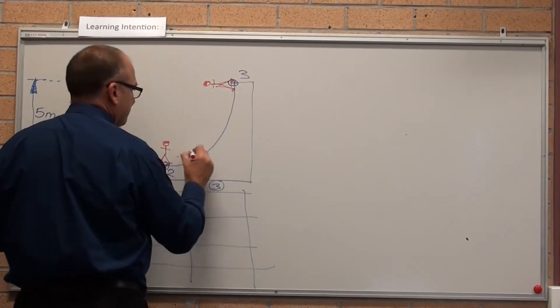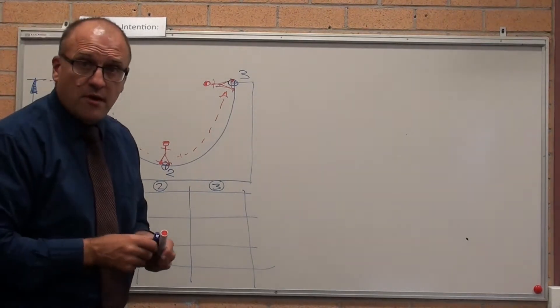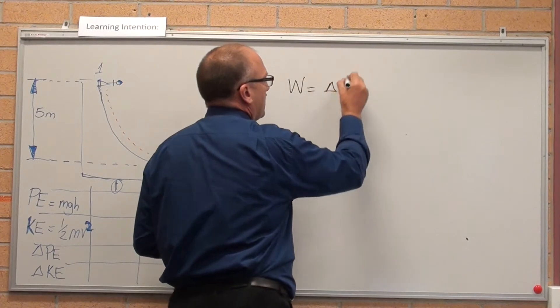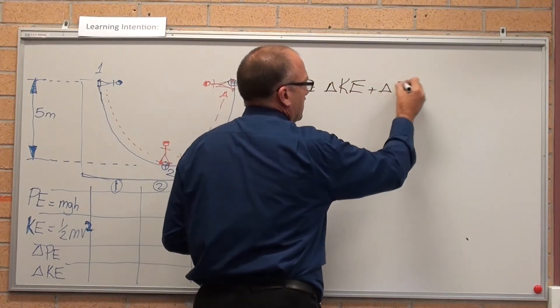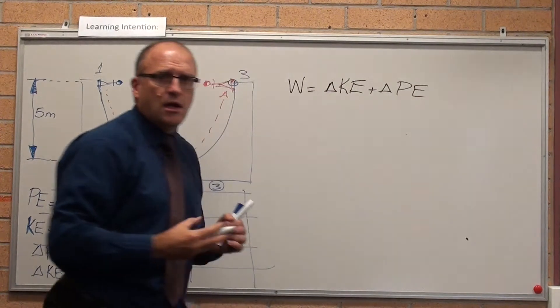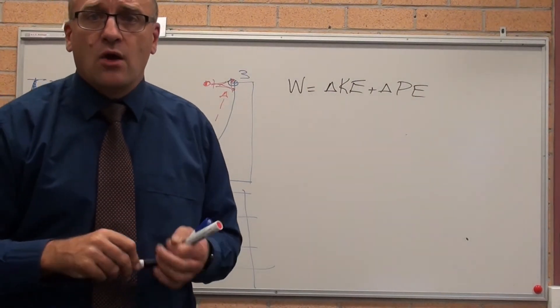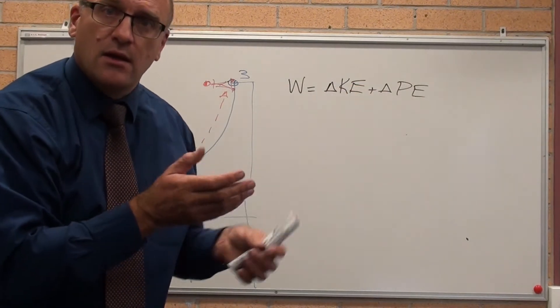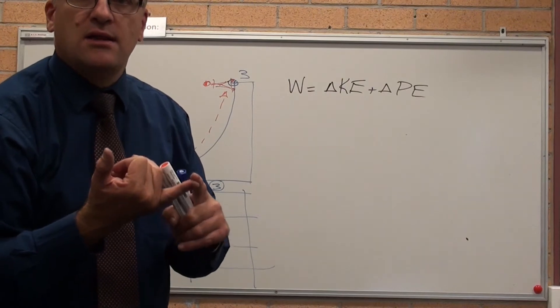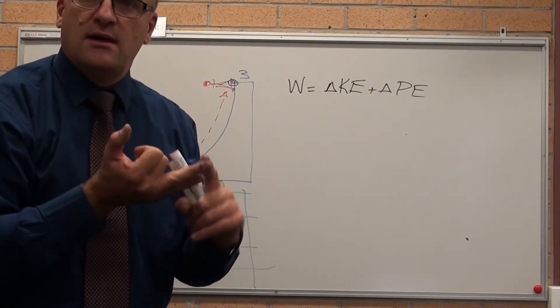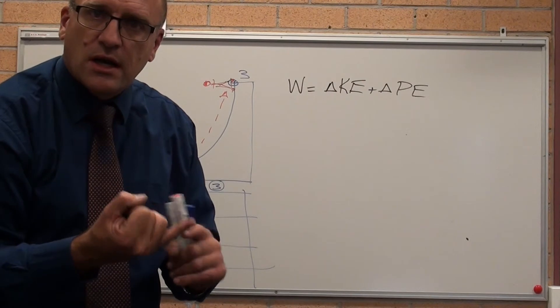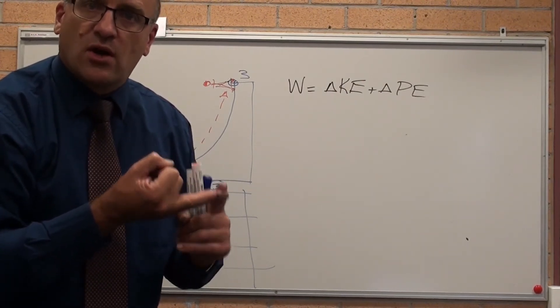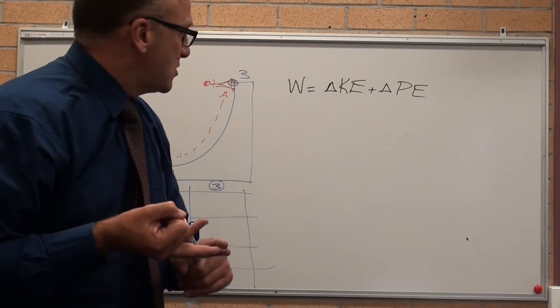The formula from your exam: work done equals change in kinetic energy plus the change in potential energy. Let's assume there is no work done. Work is force opposing motion times the distance he's traveling. Let's assume there is no friction in the skateboard, so it's not losing energy to heat through friction. Let's assume there is no air resistance, so we're not losing speed due to air resistance and drag.